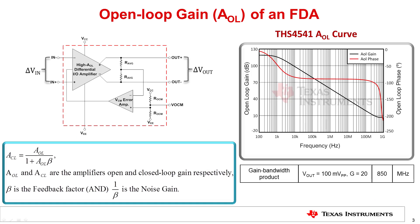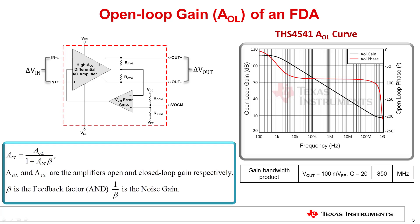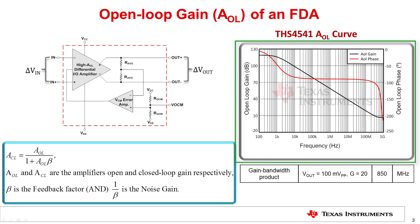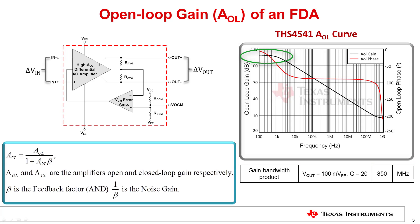The open loop gain, or AOL, of any amplifier is the ratio of its differential output to its differential input when no feedback is applied. An FDA's open loop gain is the gain of the feed forward amplifier. Just like an ideal op amp, an ideal FDA will have infinite open loop gain across an infinite bandwidth. The open loop gain and phase curves of the THS4541 are shown here. It has a very high AOL at low frequencies, which decreases at 20 dB per decade after the dominant pole.